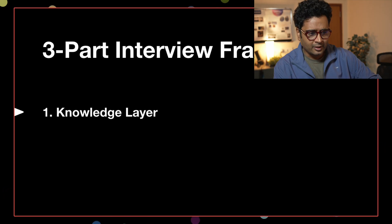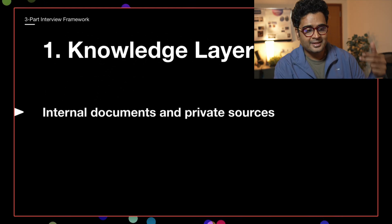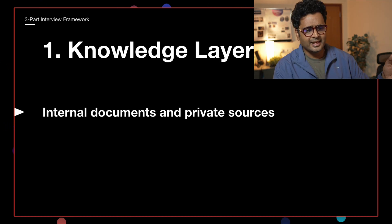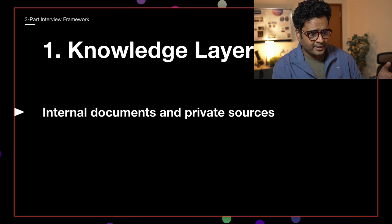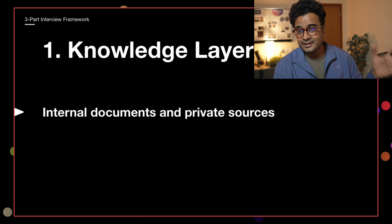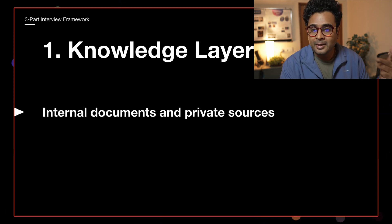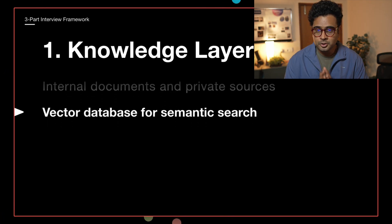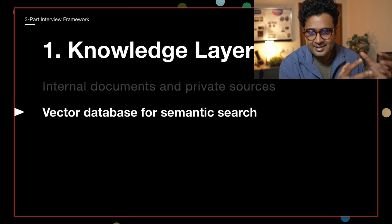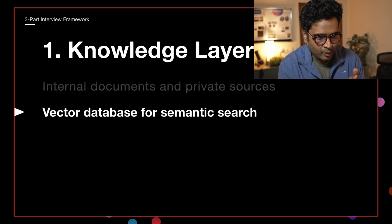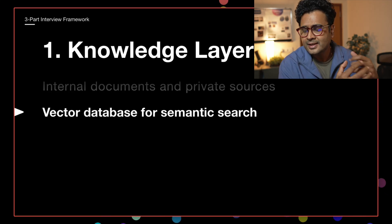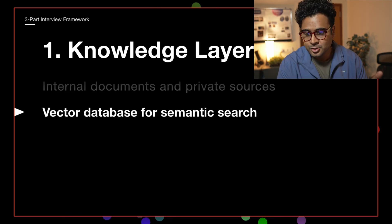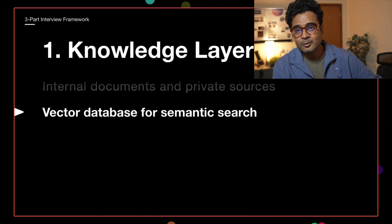If I want to start with this knowledge layer, this is where the knowledge of the enterprise lives. Here we will have the internal documents and private data sources. This can be runbooks, knowledge base, compliance documents, or domain-specific technical assets. All those would be part of this knowledge layer. On top of this knowledge layer, you will perform the chunking. That means you will split this document and save it in a vector format using the embedding model. It will be stored inside a vector database so that we can perform semantic-based searching. That means we can send in the query and get the relevant documents.